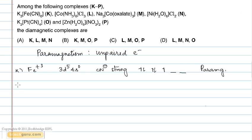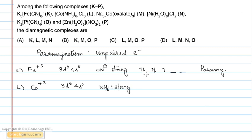Complex L is [Co(NH₃)₆]Cl₃. Here Co exists in the +3 state. The electronic configuration of Co is 3D⁶, 4S⁰. The ligand is NH₃, which is a strong field ligand. Strong field ligands tend to cause spin pairing in the metal ion, giving low spin complexes.